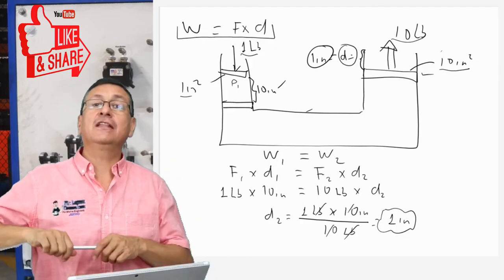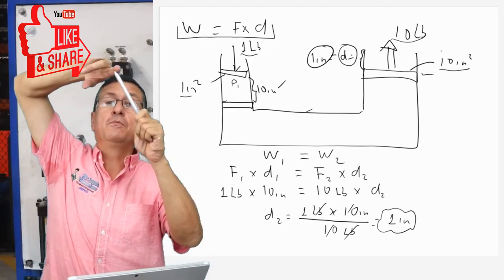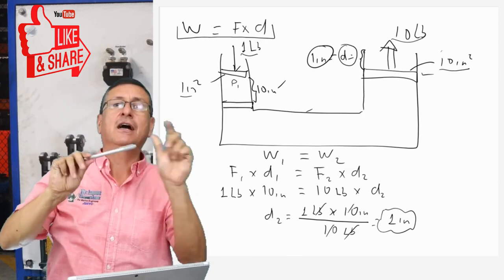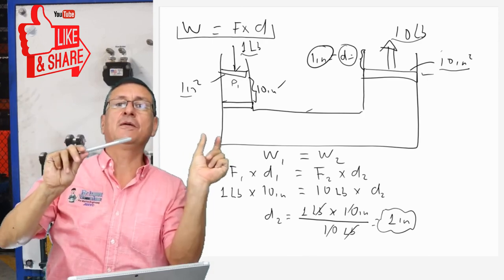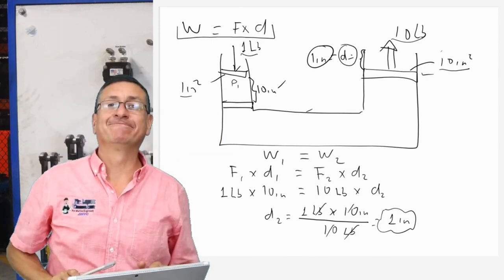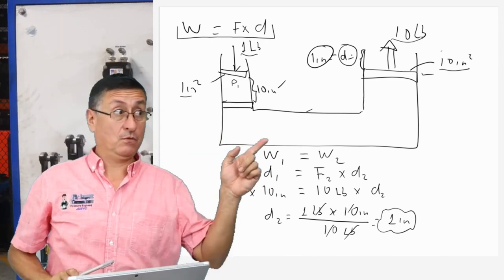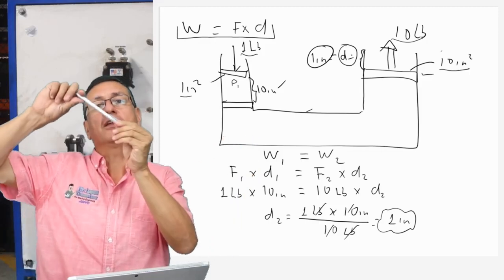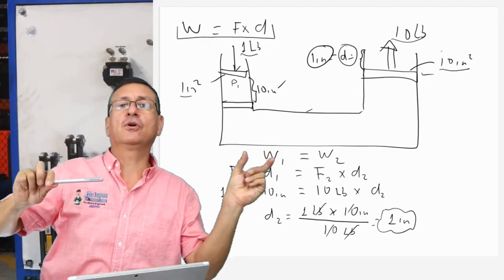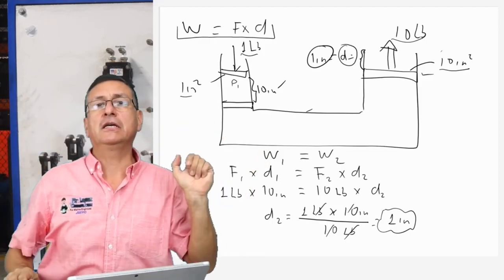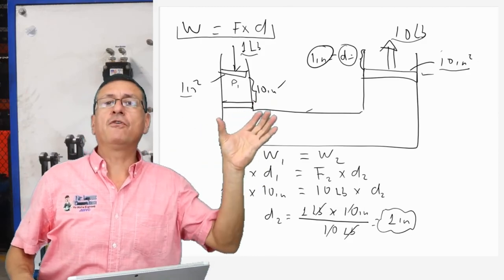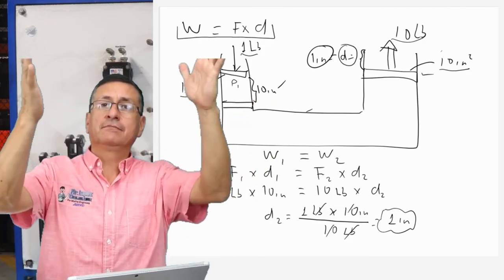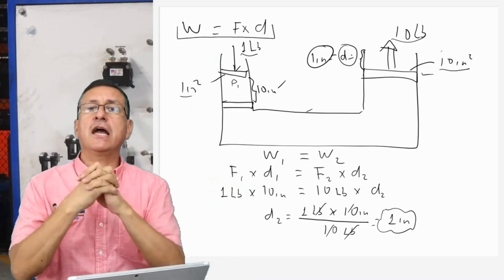For that reason, in the hydraulic jack in your car, you move the handle a lot, and the piston only moves up one inch — but with a lot of force. Here you need a small force, and the final result on the other side is high force but a small distance. This is the hydraulic jack.